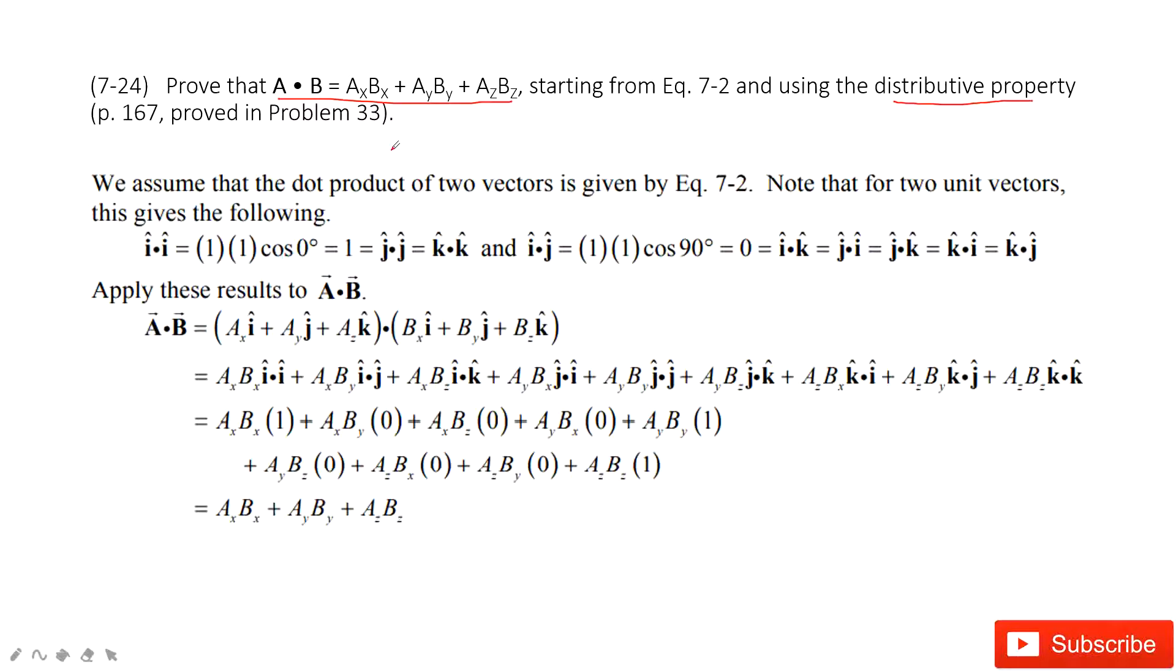The first thing we can see, we can write vectors A and B in vector format: ax in i component, ay in j component, az in k component; bx in i component, by in j component, bz in k component.